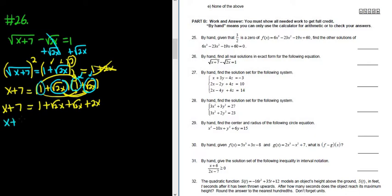So this is x plus 7 equals 1 plus, let's see, the square root of 2x plus the square root of 2x is 2 times the square root of 2x. Because you have one of them, you have another one of them, so you have 2 of them, and plus 2x. Getting there, we still have to get rid of this square root here.